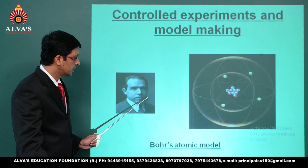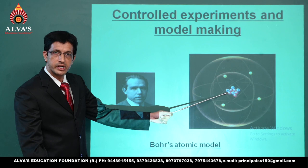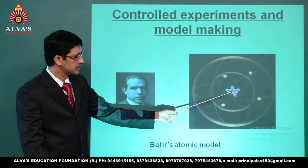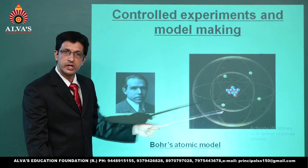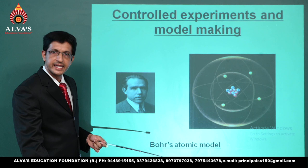In Bohr's atomic model, there is a centrally located nucleus which comprises protons and neutrons, and the electrons go around in their own orbits around the nucleus within an atom.